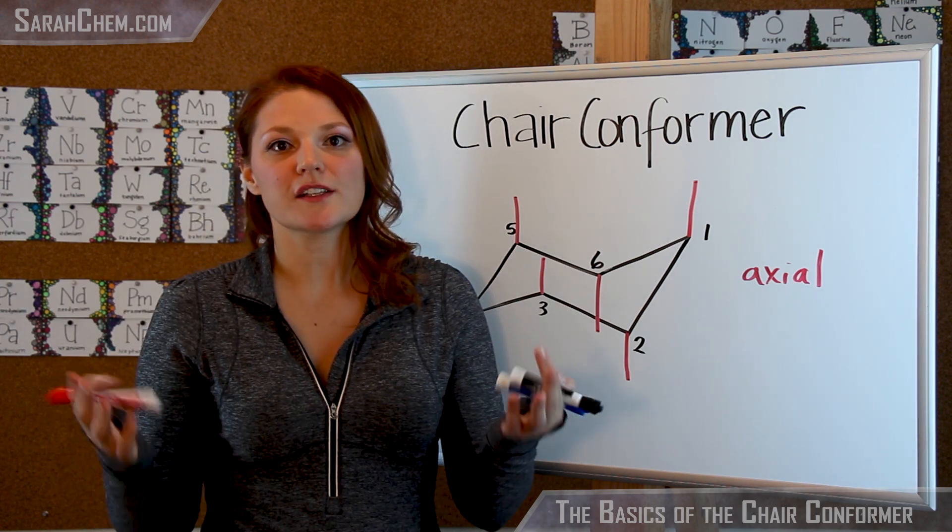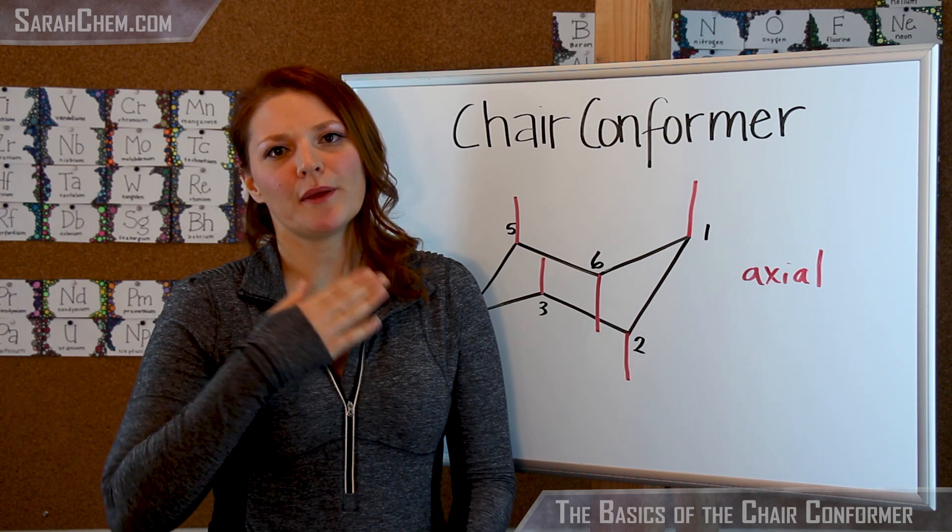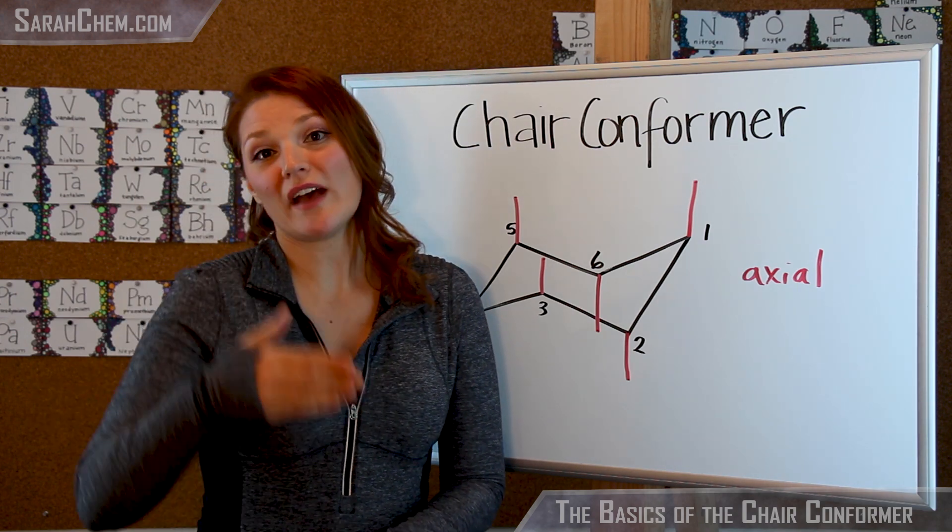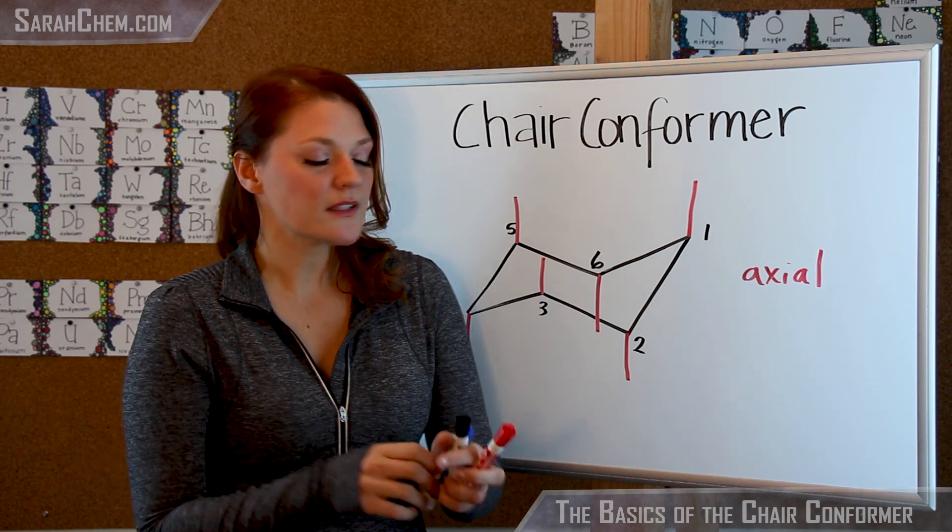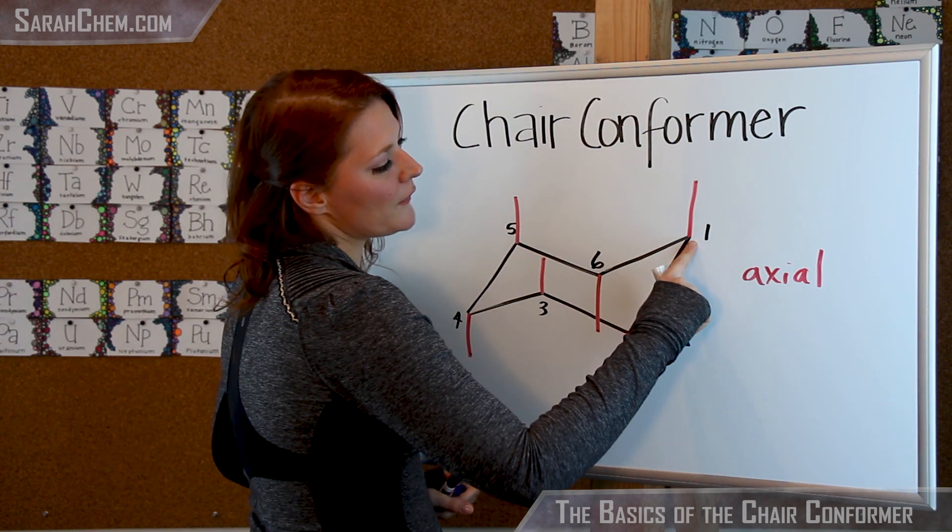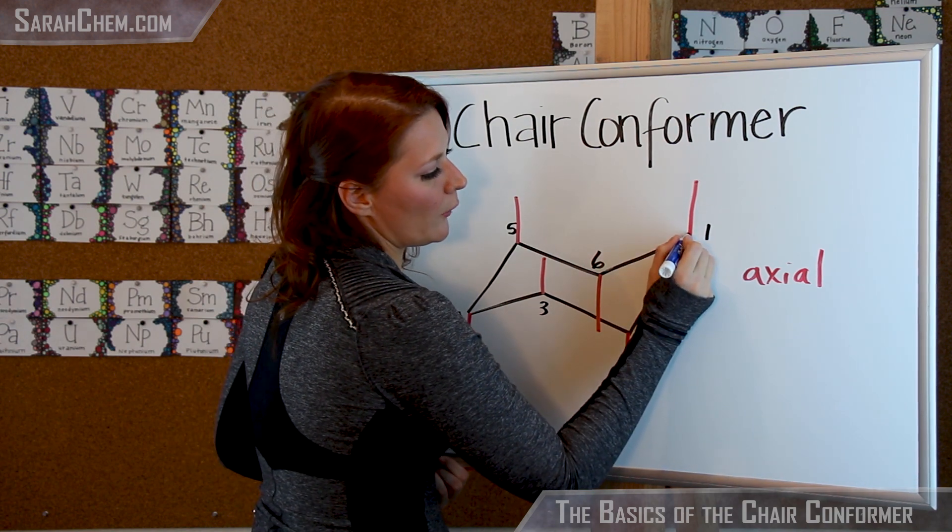So now once you have your axial, you can then add on the equatorial. So what you want to know is that you're going to oppositely place axial and equatorial. So what I mean by that is, if you have axial up, then you're going to want to have equatorial down. And equatorial is going to be placed in kind of this horizontal fashion. So over here on this position one, we see that we have axial up, which means that we're going to want equatorial down.